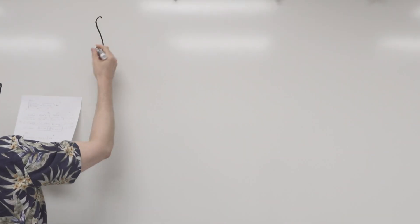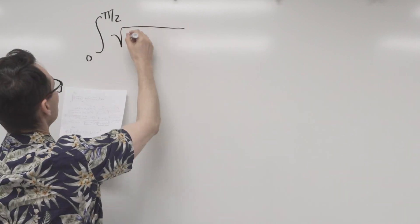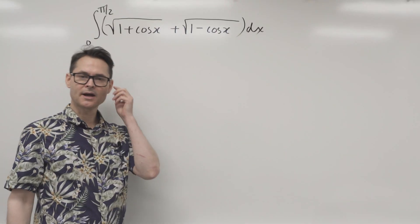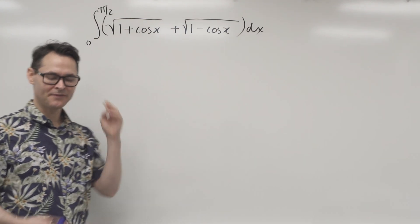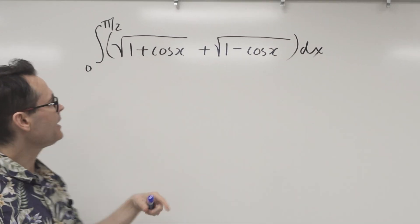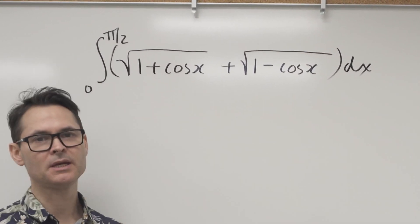All right, today let's do an ugly integral. So here it is. So there's our ugly integral that we're going to try to evaluate here. I'm noticing I've got these ugly radicals and I've got a cosine which is giving me an idea.